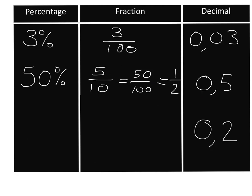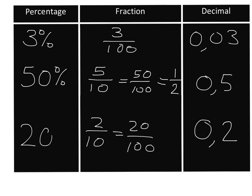Okay, so you should have gone quite easily as follows: 0,2 you know is 2 tenths, which is 20 over 100, and you can immediately write down the percentage. Then to write the fraction in simplest form, divide top and bottom by 2 and you get 1 over 5. So 20 percent is the same as one fifth, and it's the same as 0,2.